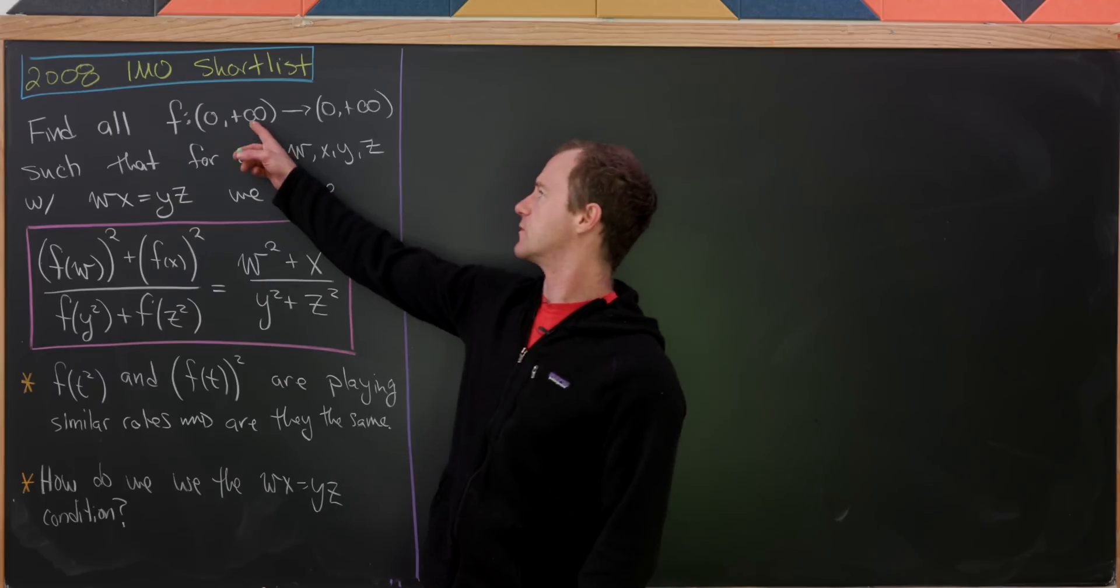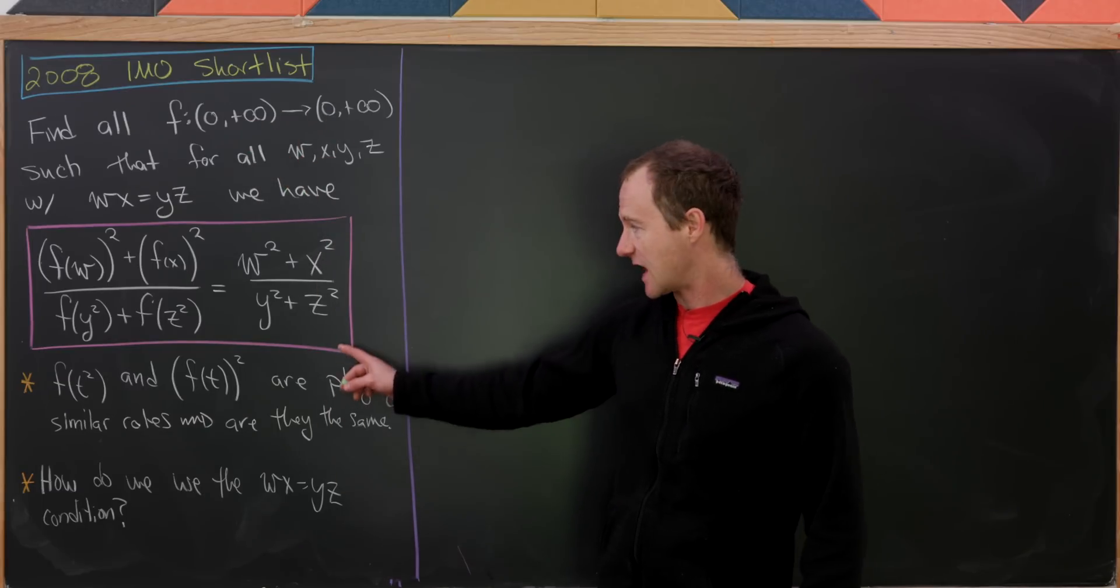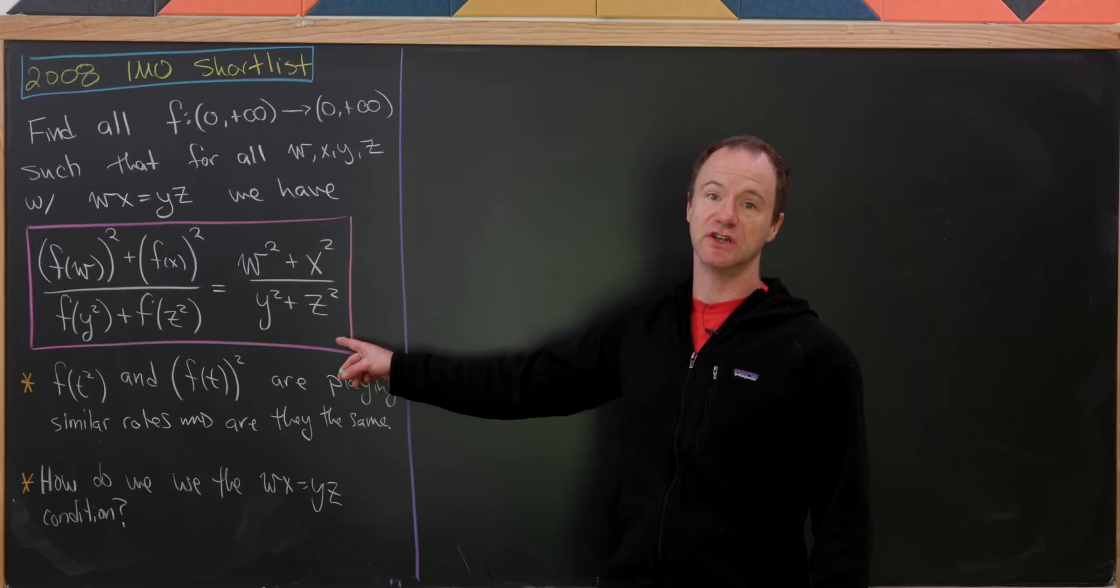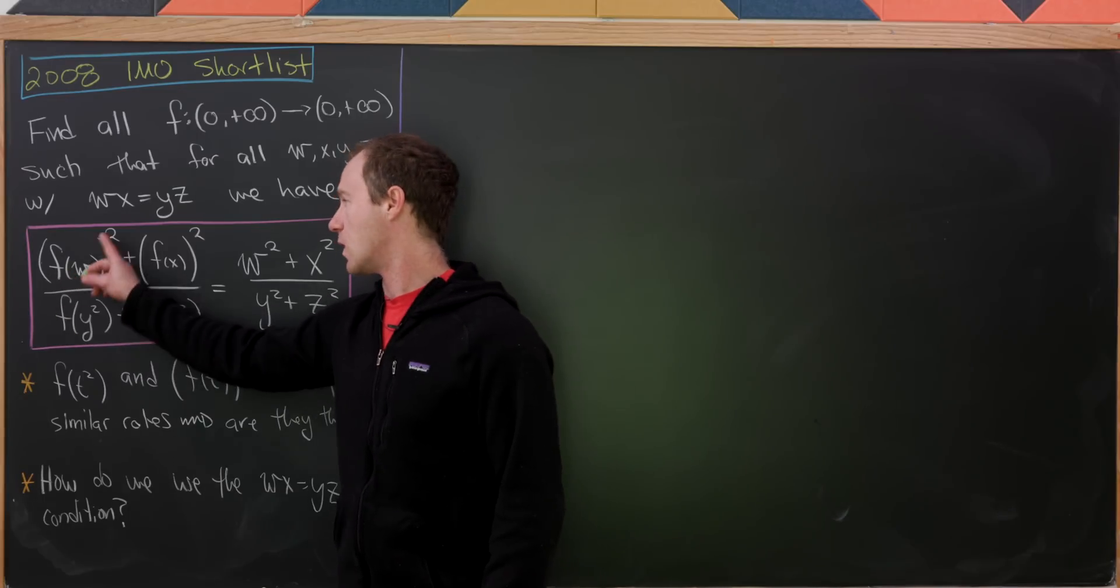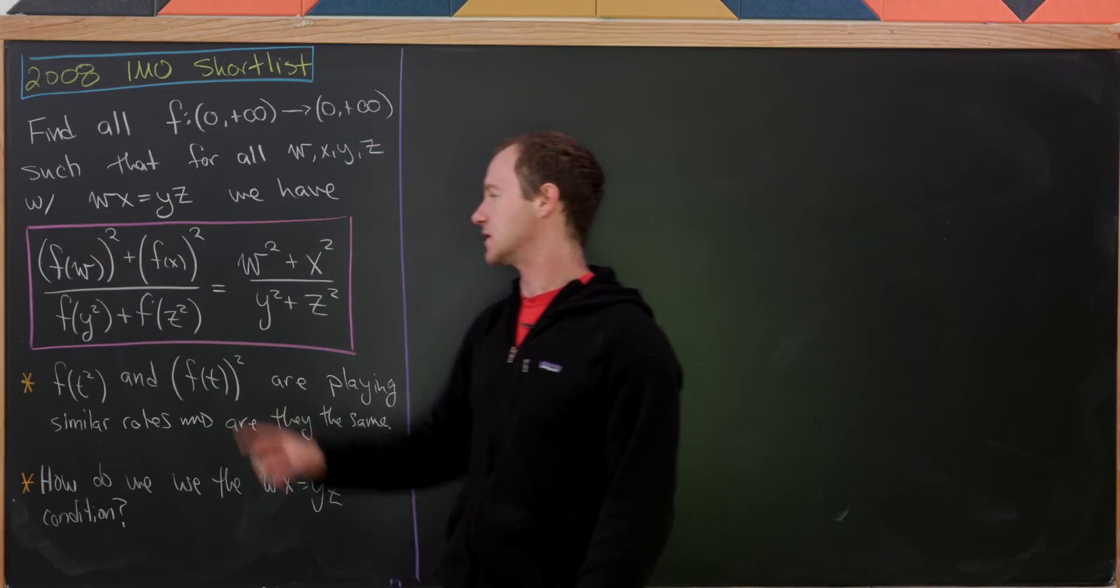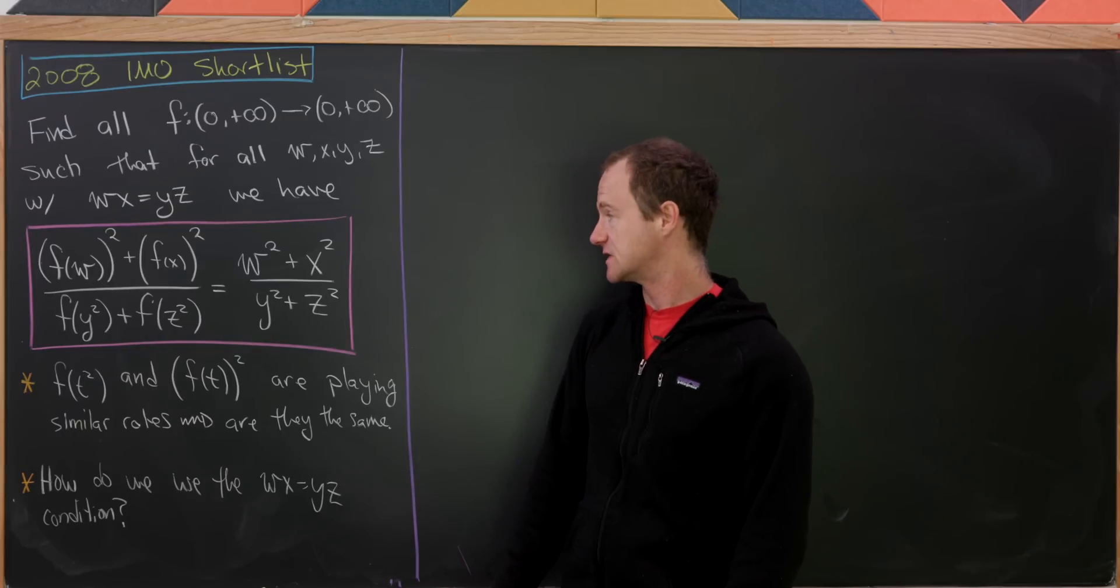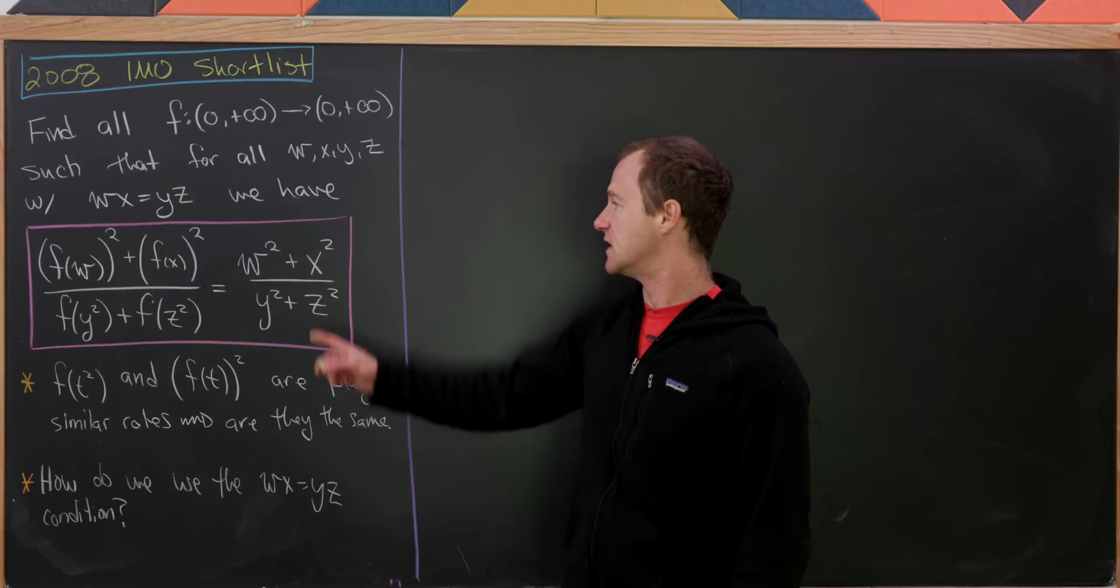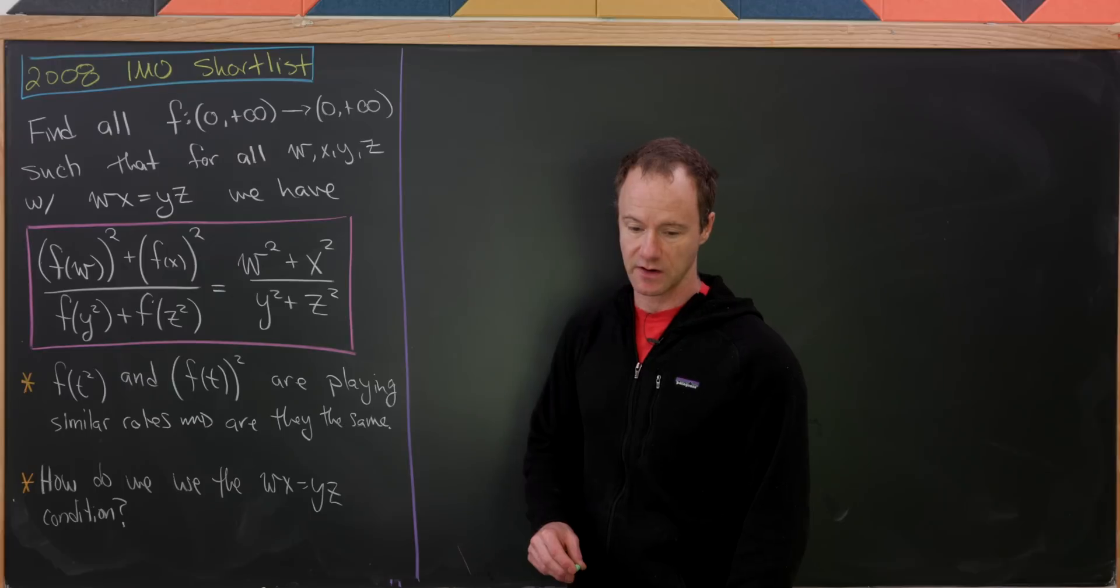Positive real numbers are both their domain and codomain such that this crazy functional equation holds. We have f(w)² plus f(x)² over f(y)² plus f(z)² equals w² plus x² over y² plus z².